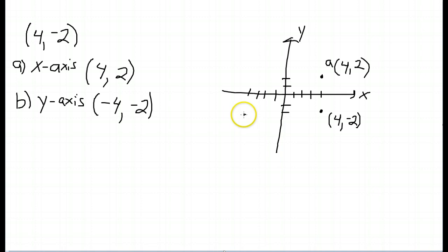And I plot this point, label negative 4, negative 2. And this is part B.